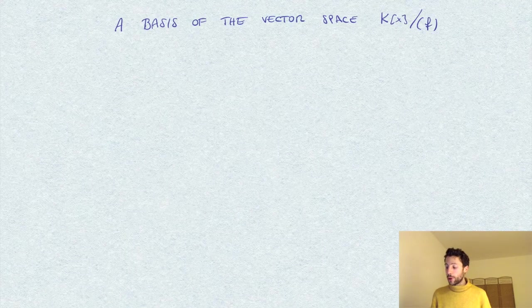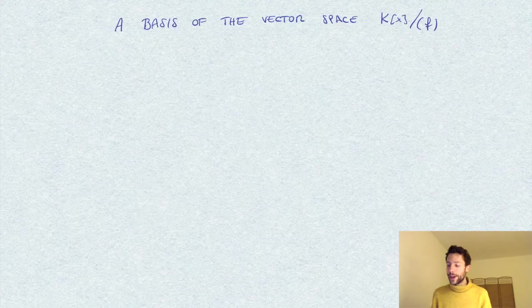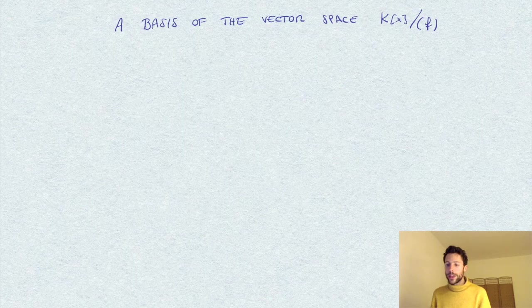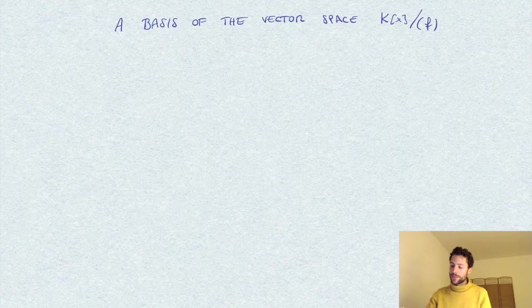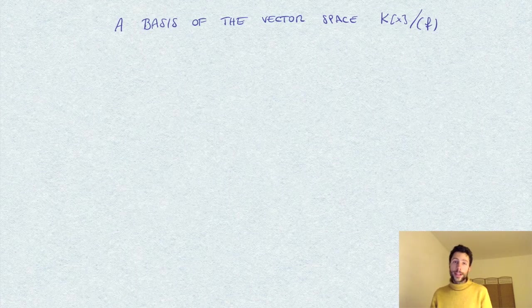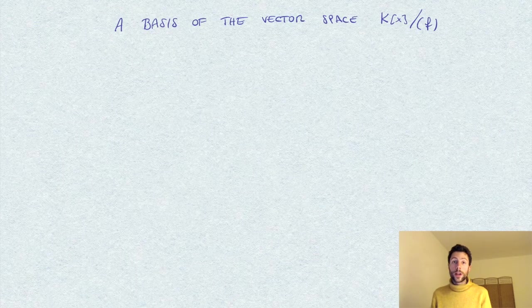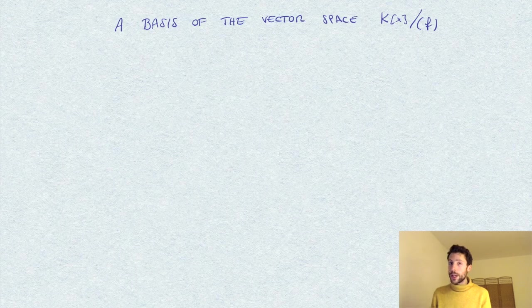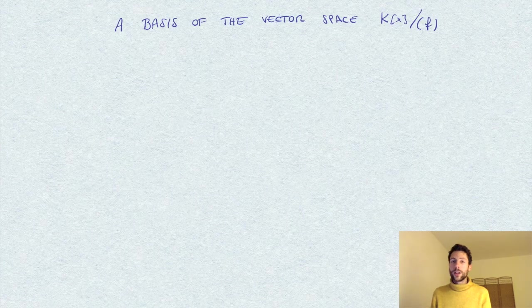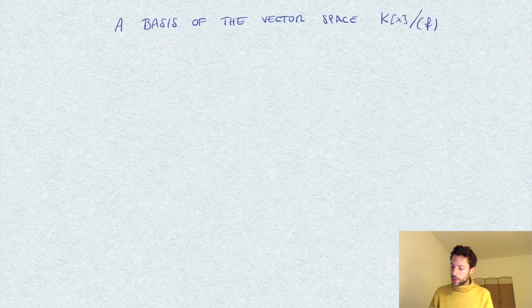When you quotient the polynomial ring in one variable by the ideal generated by an irreducible polynomial, you get an algebraic extension of the field k. The basic question is: what is its dimension, and can we write down an explicit basis? This is the exercise I want to solve.